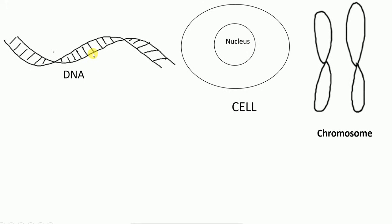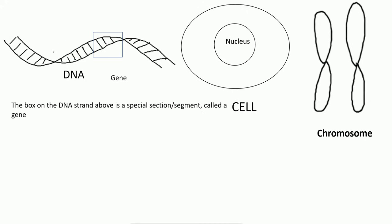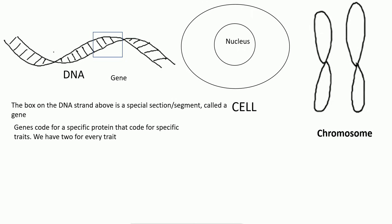Now you know about DNA and chromosome. So what is a gene? As shown by the box here, a gene is a segment of the DNA which codes for specific proteins, which in turn express some specific traits. Not all parts of the DNA are coding — some parts code for proteins and express specific traits, while the remaining part of the DNA is non-coding.